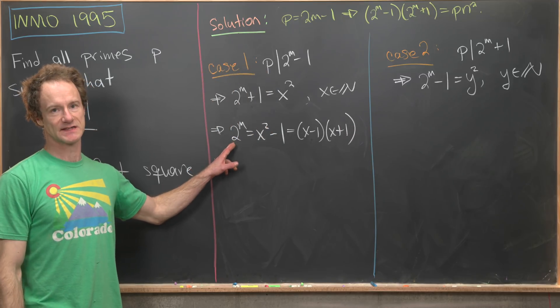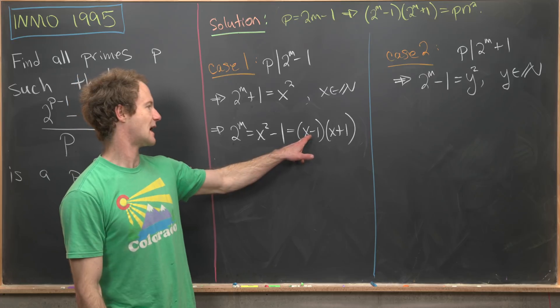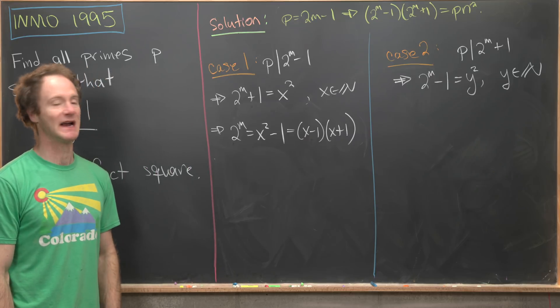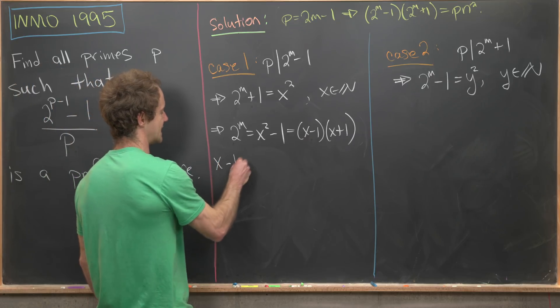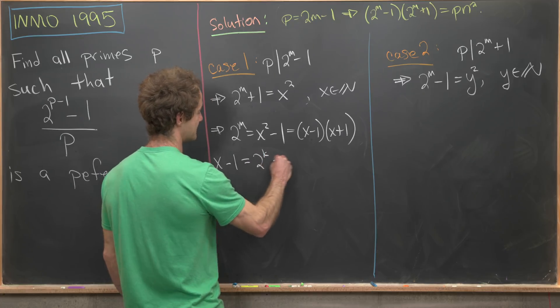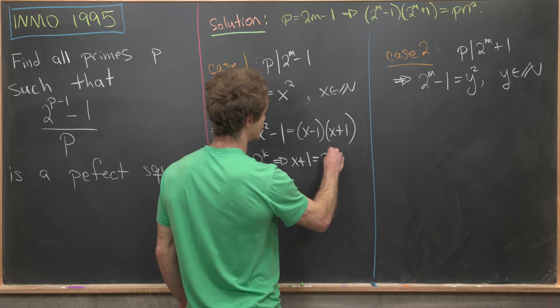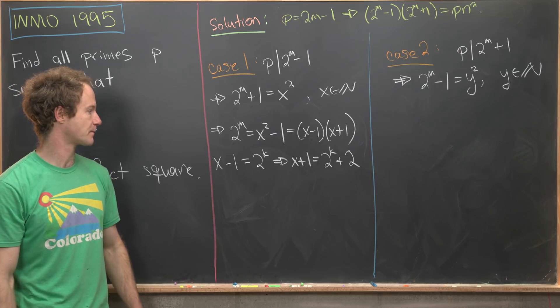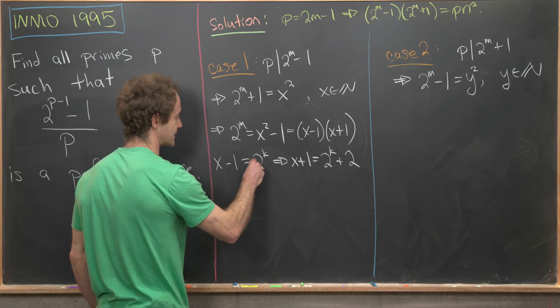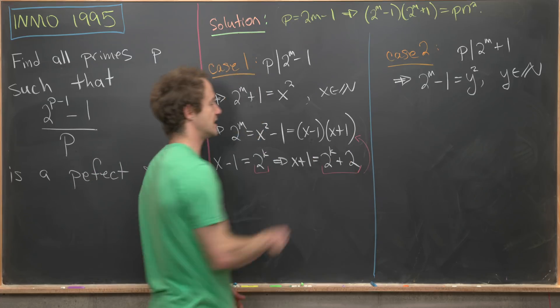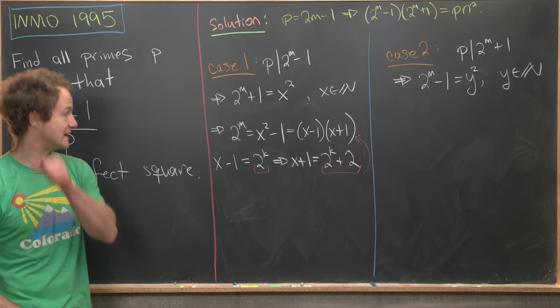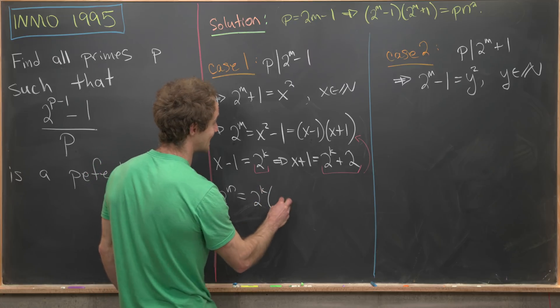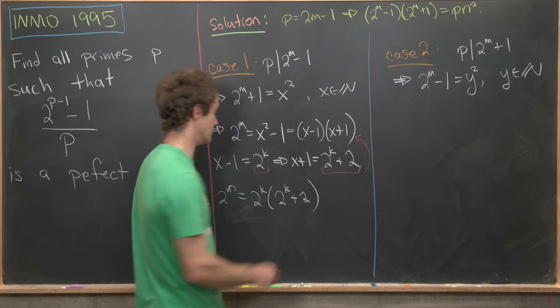But now we see that the left hand side is a power of 2. That tells us that x-1 and x+1 both must be powers of 2. So let's use the fact that x-1 is a power of 2. So we can write x-1 = 2^k. So that tells us that x+1 = 2^k + 2, as x+1 is x-1 plus 2. Now next, we can insert these versions of x-1 and x+1 into the previous equation and see what we get. So now we'll have 2^m = 2^k(2^k + 2) like that.